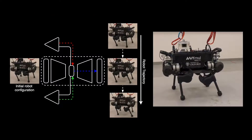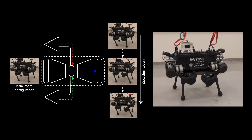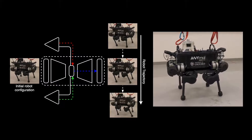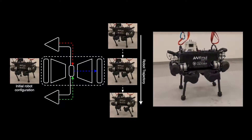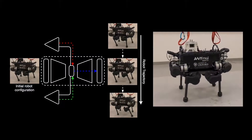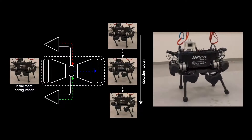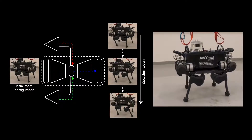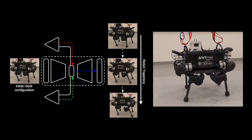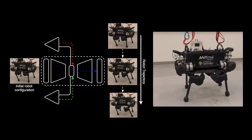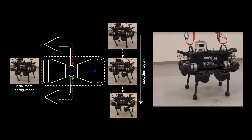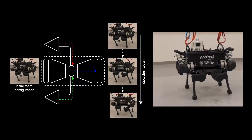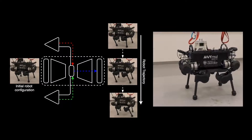We aim to find a stable trajectory for robot locomotion on flat ground by latent space optimization. We take in as input the initial robot configuration and solve for a walk trajectory using gradient descent in a structured latent space.